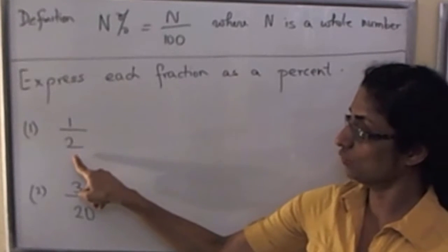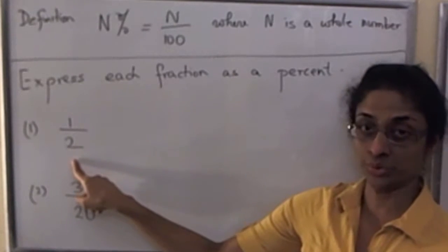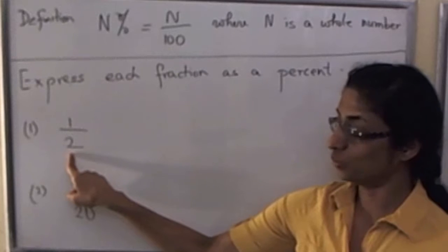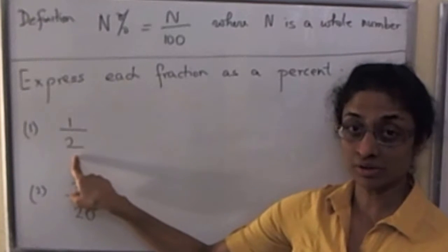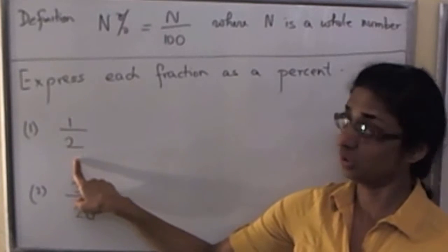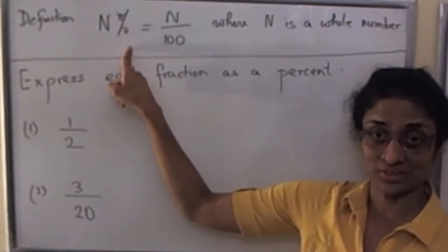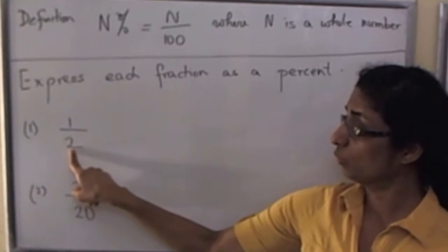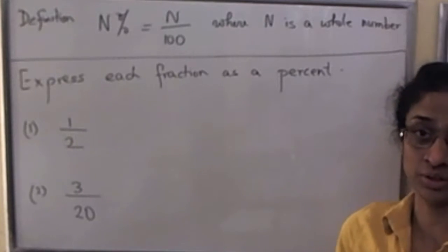So now let's look at the fraction we have. We have 1 over 2. In the denominator, we see that we have a 2. If we had 100, then we have seen in another video how to quickly use the definition and rewrite it as a percent. But right now, we have 2 in the denominator.